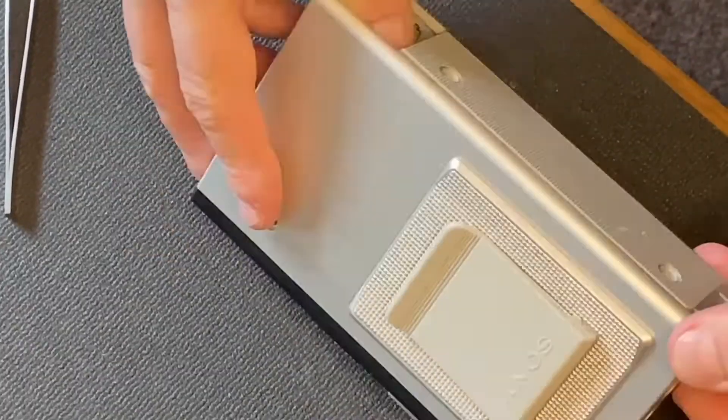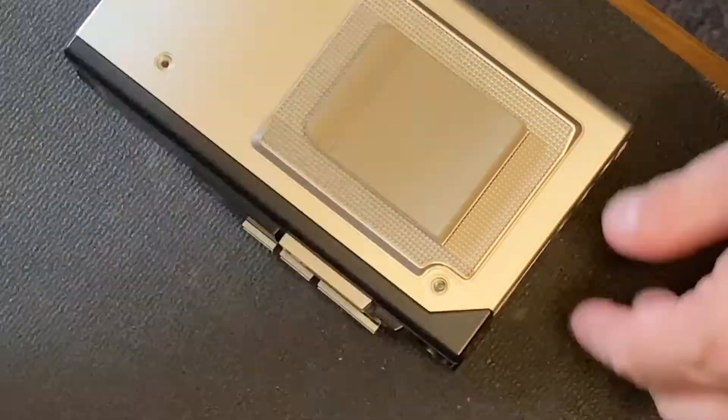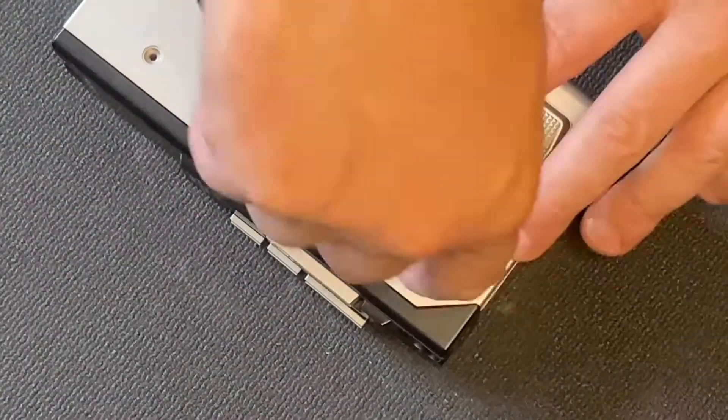Step 15: Screw the housing back together. Put the back plate on and reinsert all six enclosure screws. Make sure they're tight but don't over-tighten, as this could damage the plastic.